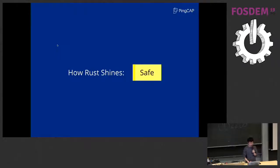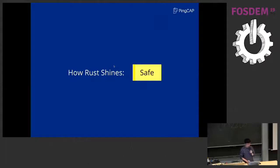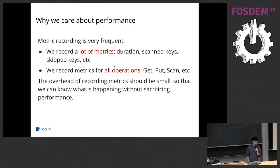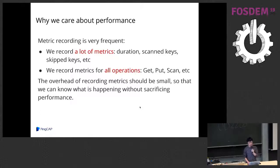Now let's see how Rust enables the Prometheus library to be very fast. Why do we care about performance? Because we record metrics very frequently in TiKV — duration, scanned keys, skipped keys, and so on. We have hundreds of metrics recording every second, and we record metrics for all operations TiKV provides: get, put, scan, and so on. The overhead of metrics should be very minimal so that we can know what is happening without sacrificing performance.